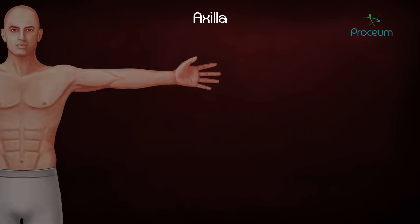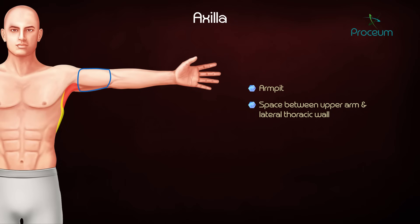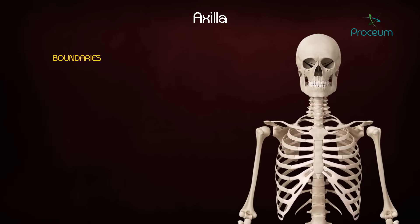The axilla, also known as the armpit, is a space between the upper part of the arm and the lateral thoracic wall. It is usually filled with fat. The apex is also known as the cervical axillary canal.